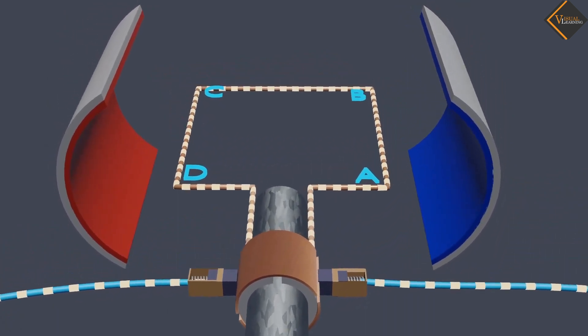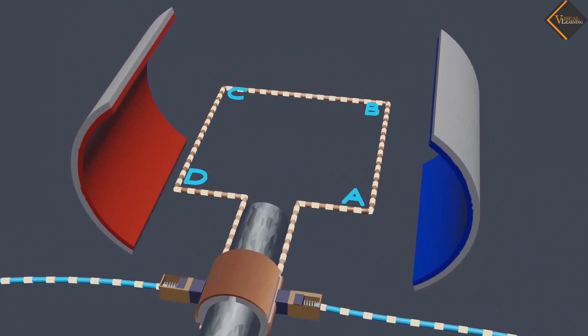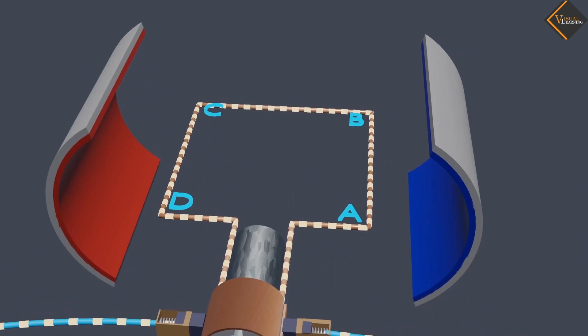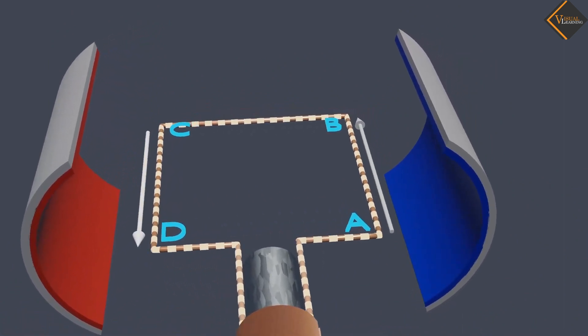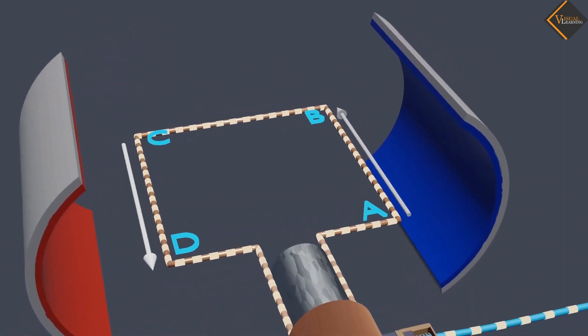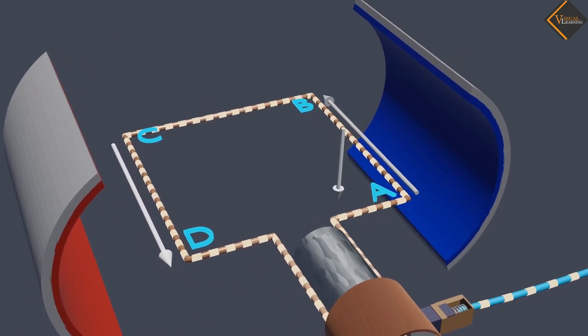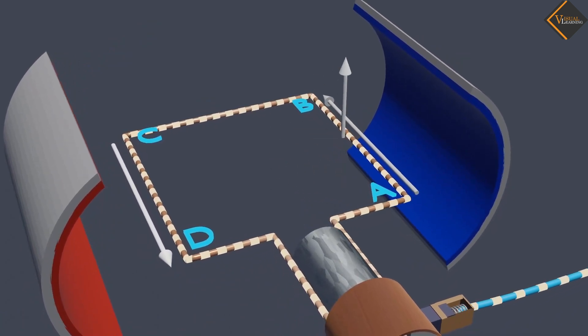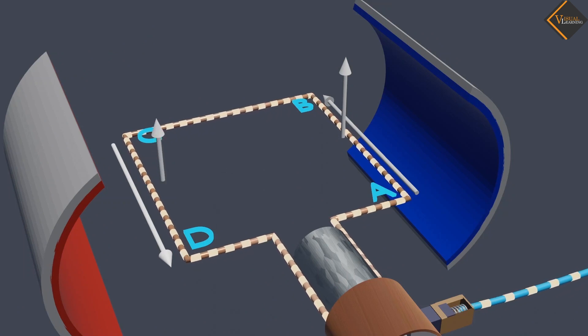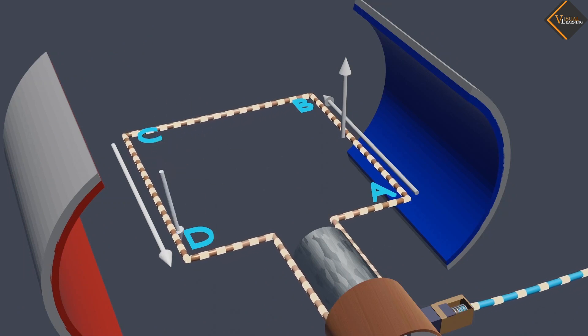The reversal of current also reverses the direction of force acting on the two arms, AB and CD. Thus the arm AB of the coil, that was earlier pushed down, is now pushed up. And the arm CD, previously pushed up, is now pushed down.